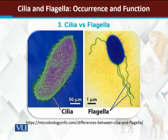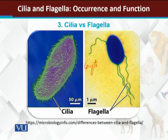Here is the comparison between cilia and flagella. Cilia are short in length compared to flagella. Flagella are long, while cilia are short. The number of cilia on a cell is very large compared to flagella.